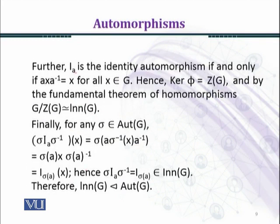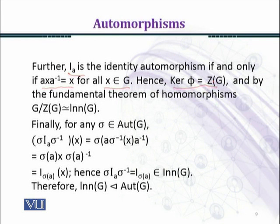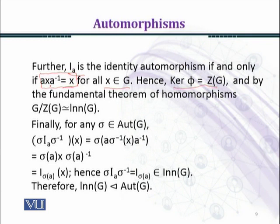Further, I_a is the identity automorphism if and only if axa⁻¹ = x for all x belonging to G. The center of G contains exactly those elements that commute with every element of the group. Hence, the kernel of φ is equal to the center of G, since the commutativity condition is satisfied precisely for such elements.